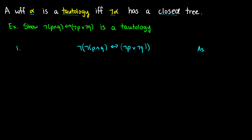So with this question, I want to show that 'not-p and q if and only if not-p or not-q' is a tautology. What I need to do is negate it as my initial assumption, because we're going to say this is not a tautology and show via contradictions. As you'll see, we have our alpha here and I have negated it out front with the not operator.